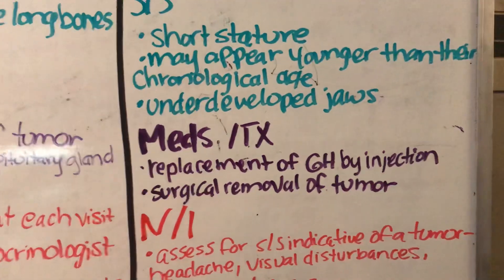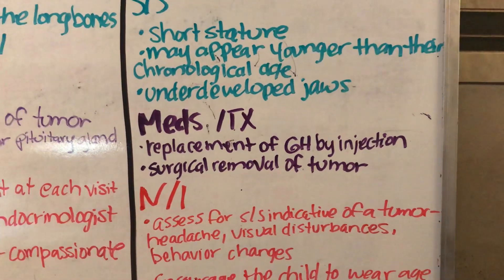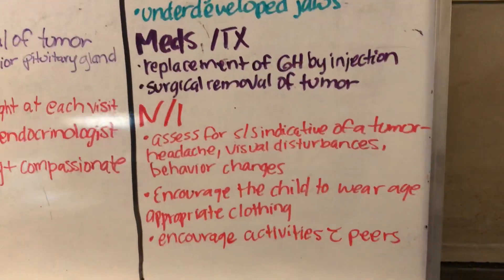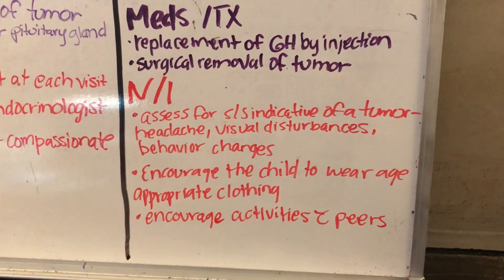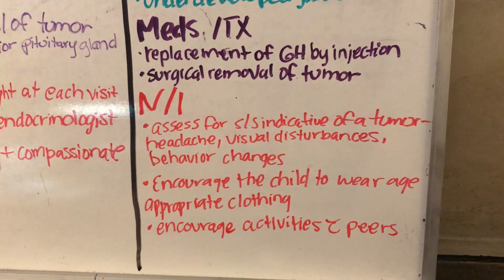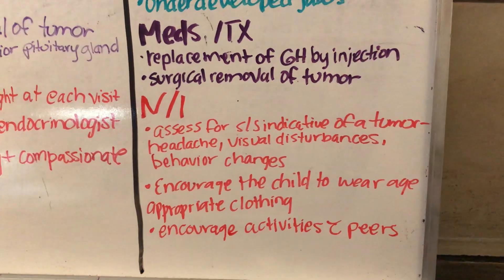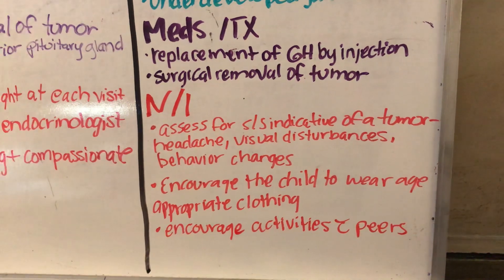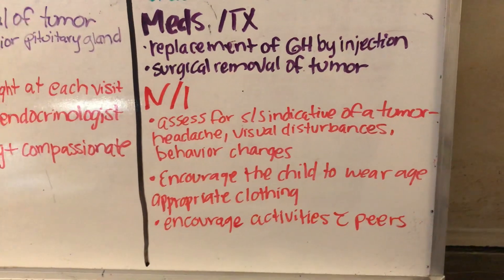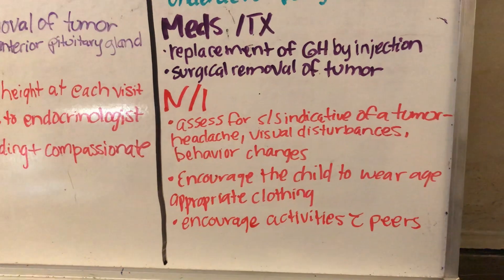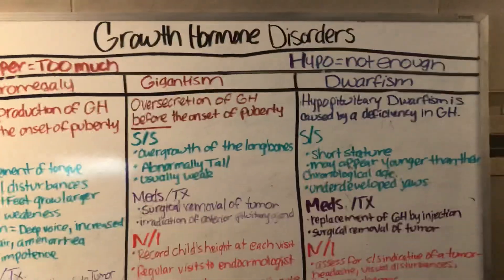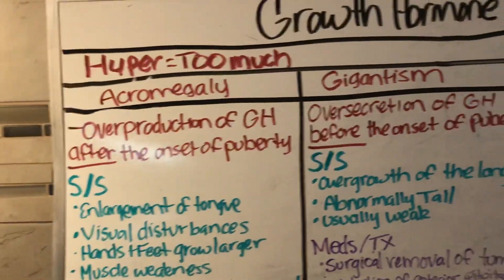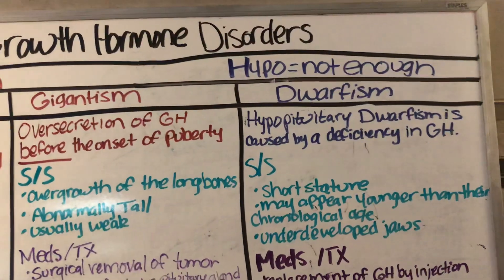Treatment for dwarfism includes replacement of growth hormone by injection or surgical removal of a tumor. Nursing interventions include assessing for signs and symptoms indicative of a tumor such as headache, visual disturbances, and behavior changes. You also want to encourage the child to wear age-appropriate clothing and to do activities with their peers.